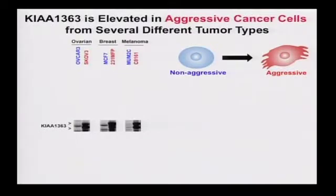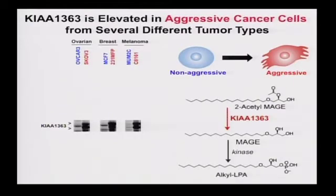Moving on to the other major enzymatic activity from this class that also is consistently dysregulated in aggressive cancer cells. This was an interesting case because this enzyme has a KIAA name, which if you are genome hackers, you'll recognize - that means we have no idea what it does. Using largely shRNA technologies, Kyle Chang in our lab was able to determine that this enzyme regulates an unusual class of lipids in cancer cells: ether lipids.